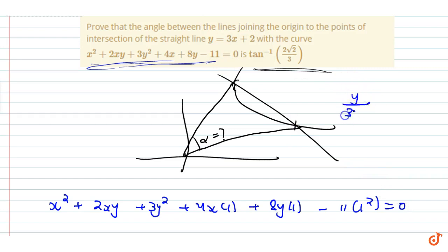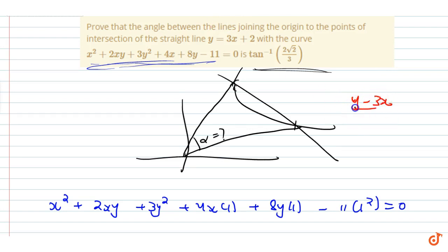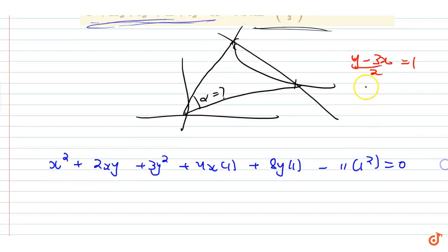y upon 3x + 2... that is, (y − 3x) divided by 2 equals 1. So (y − 3x)/2 = 1. Now look at what I will do.